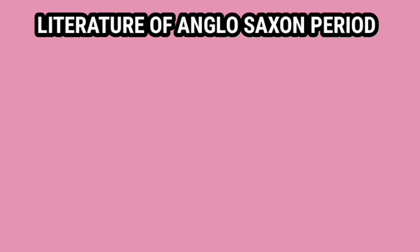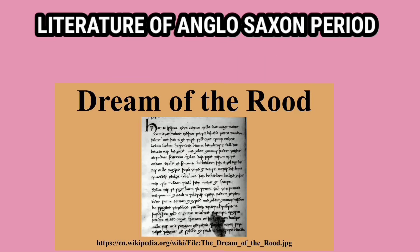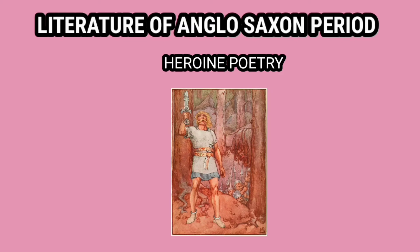Poetry کو ان کی classifications میں تقسیم کیا جاتا ہے: Lyrical poetry، Religious poetry، اور Heroic poetry۔ Religious poetry کی مثال 'The Dream of the Rood' ہے۔ Lyric poetry میں 'The Wanderer' اور 'The Seafarer' شامل ہیں۔ Heroic poetry میں Anglo-Saxon کا سب سے اہم literary work آتا ہے۔